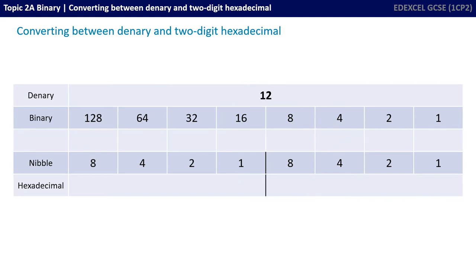Let's have a look at converting the denary number 12 into hexadecimal. What you want to do is go through binary — it just makes things a lot easier. So we take the number 12 and we write it out in binary, as shown in a previous video. There's the number 12 in binary: 0, 0, 0, 0, and an 8 plus a 4. 8 plus 4 is 12, and then 0 and 0 at the end.